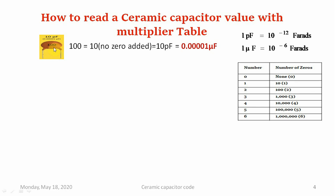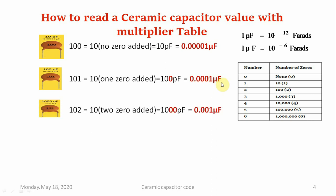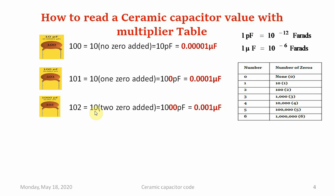If the capacitor value is 100, we write the first two digits as they are and since the multiplier is 0, we append no zeros — that turns out to be 10 picofarad, or 0.00001 microfarad. If 101 is written, we append one zero giving 100 picofarad, which is 0.0001 microfarad. For 102, we append two zeros giving 1000 picofarad, which is 0.001 microfarad.